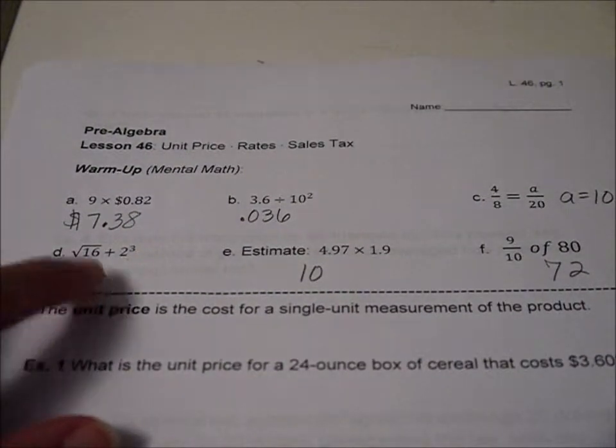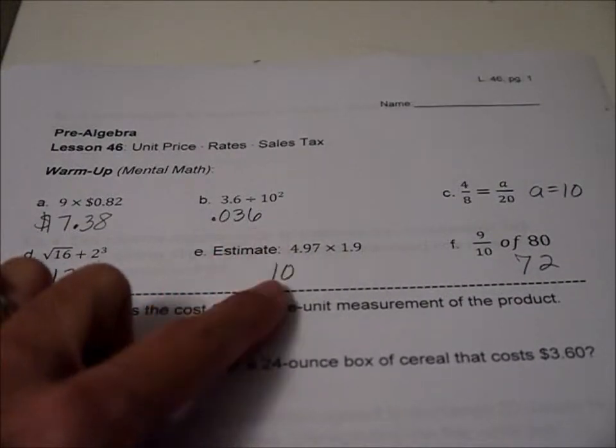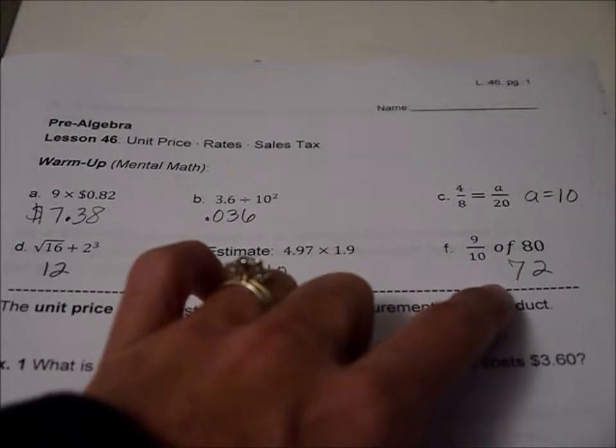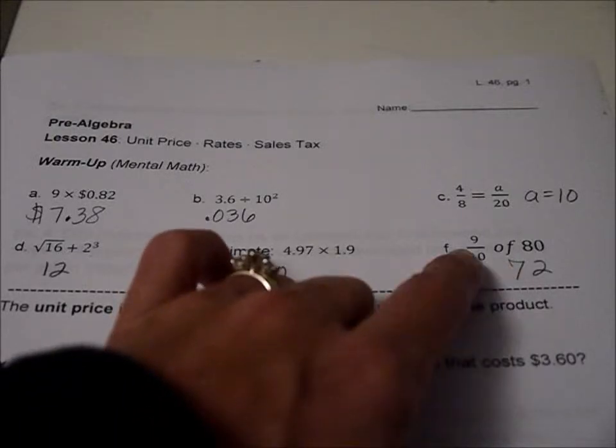This one, square root of 4 plus 8 is 12. Estimate, that would be 5 times 2, which is 10. And 9/10 of 80, well, 1/10 is 8, 8 times 9 is 72.